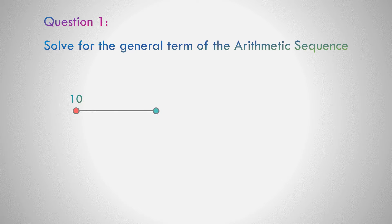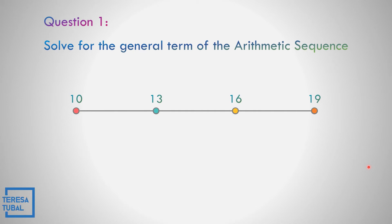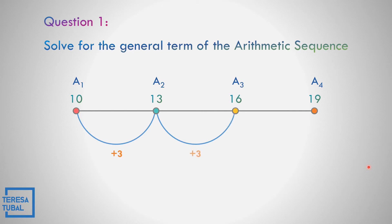Solve for the general term of the arithmetic sequence 10, 13, 16, and 19. The first term is 10, second term is 13, third term is 16, fourth term is 19. The common difference from the first up to the last term is equal to 3.